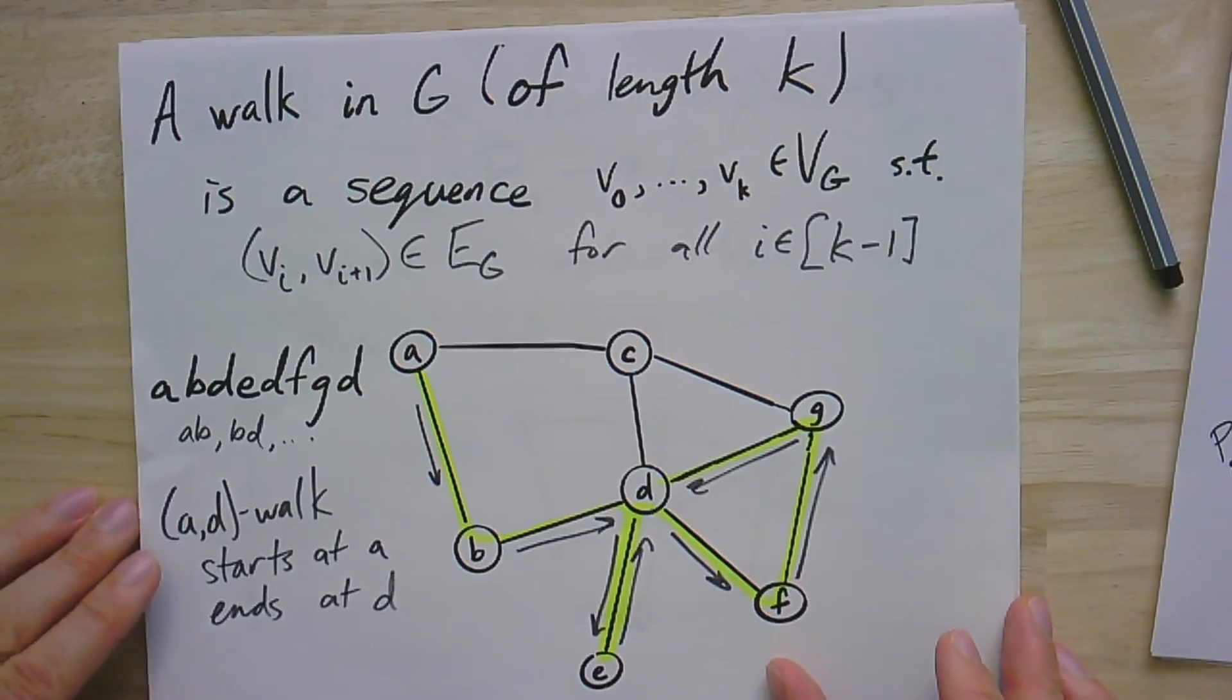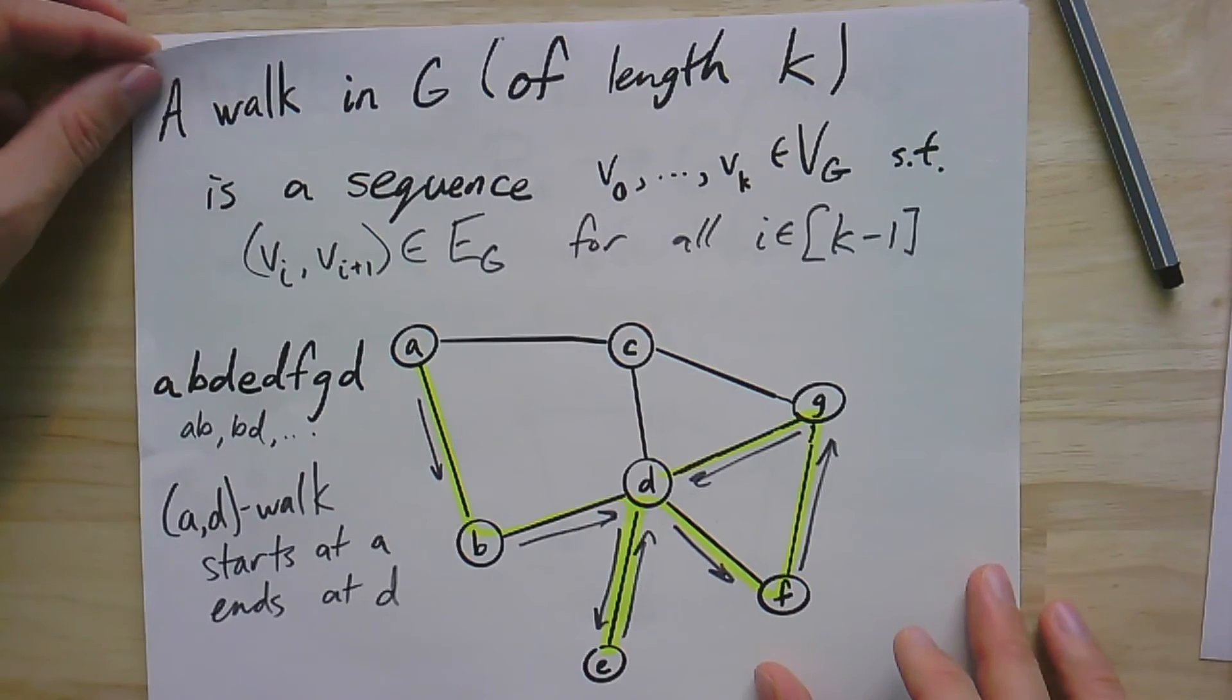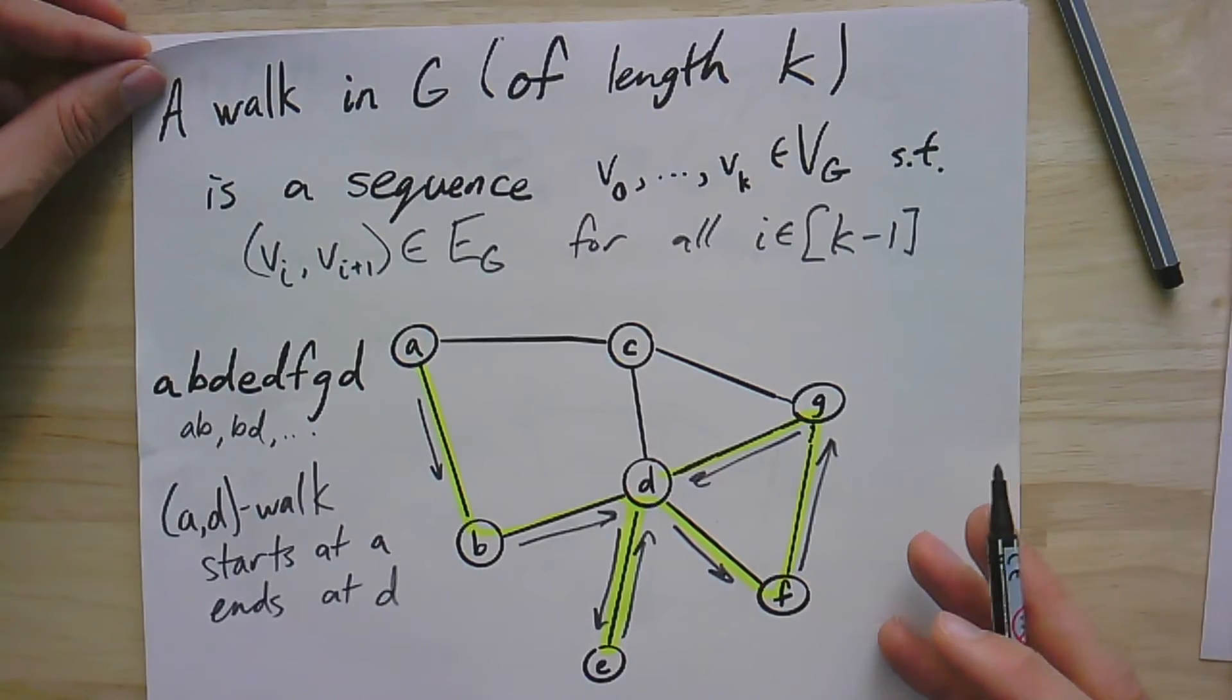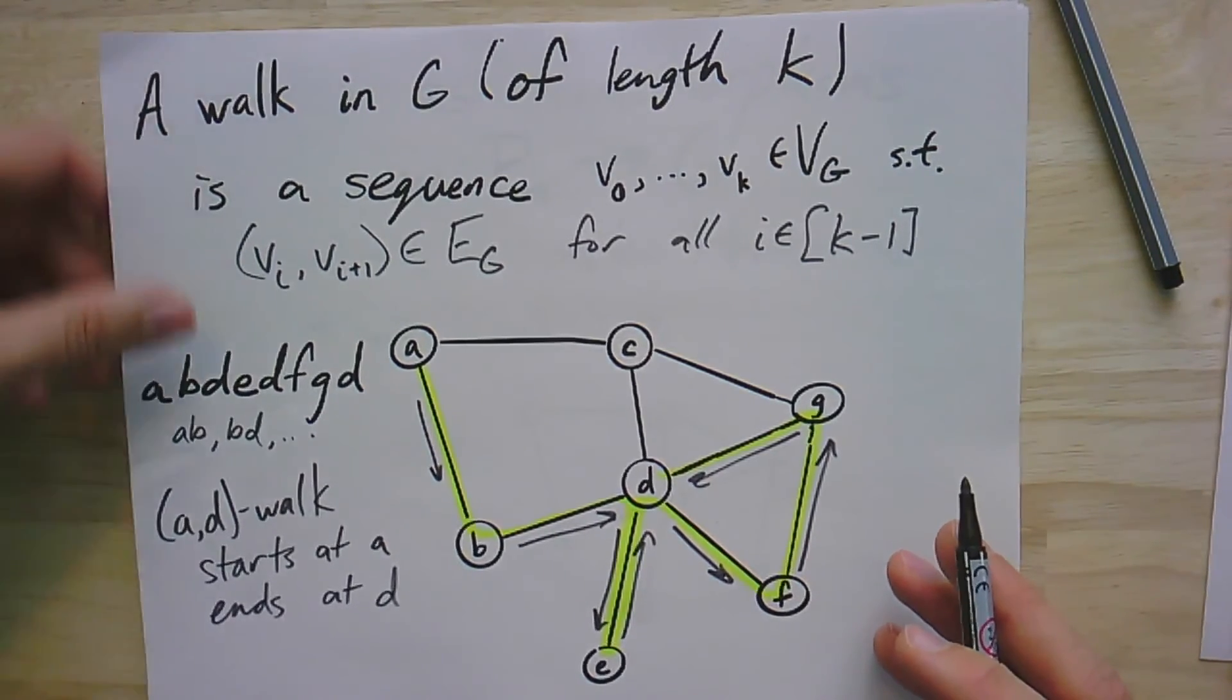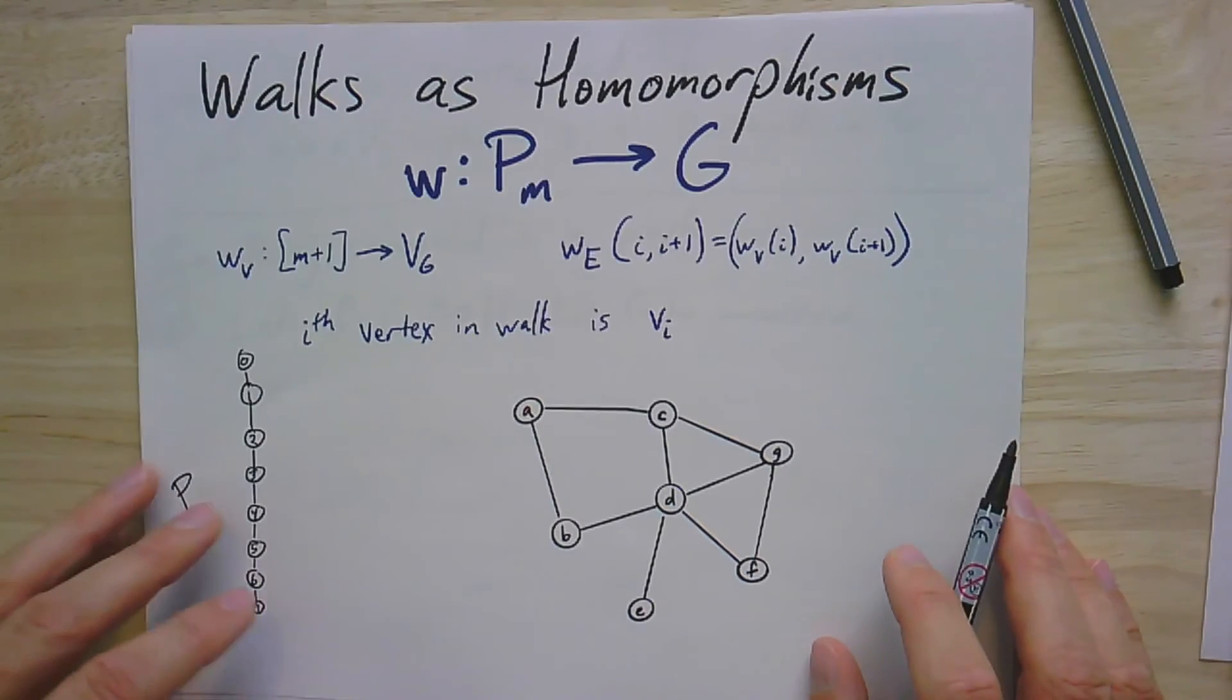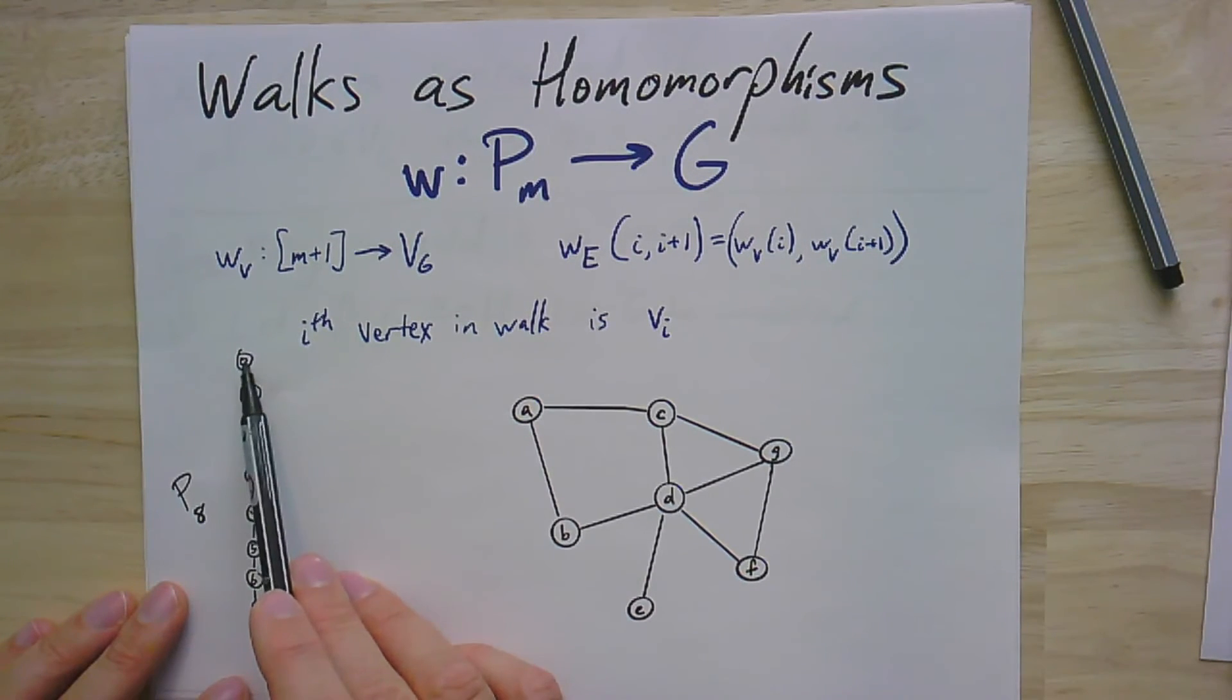Now, continuing with the theme that we've been going through so far, I'm going to take this notion of a walk and recast it to understand it strictly in terms of homomorphisms. Because, in fact, a walk just is a homomorphism from a path into the graph. For instance, here is my path of length eight. If I take a mapping from this path, I'm going to map each of these vertices into a vertex in the graph.